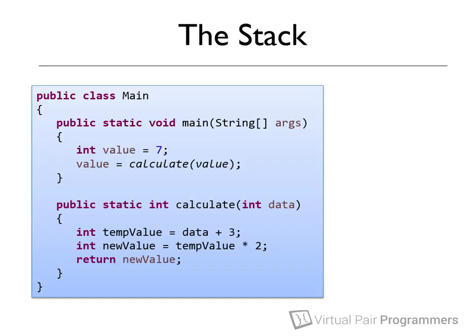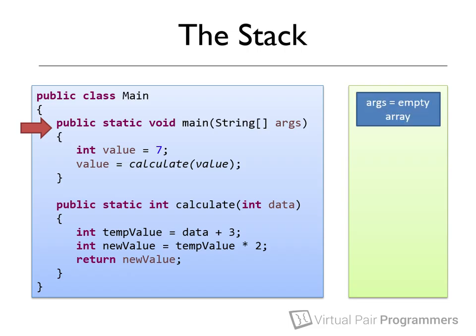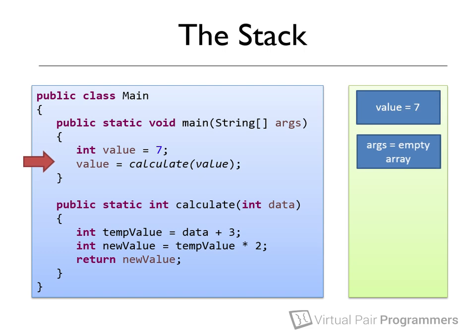Here's an example of how this works. We've got a simple program which we're going to run through line by line, and we'll look at the state of the stack after each line. Our application starts in the main method. This method has a parameter called args, which is an array of strings, so this will go to the top of the stack. Next, we declare a variable — an int called value — which gets pushed to the top of the stack. The next line calls a method called calculate, passing the value of the local variable called value to that method. A very important point is that a copy of the variable is actually passed to the method.